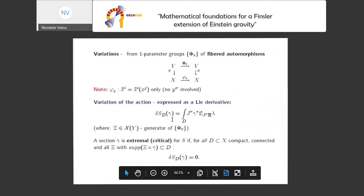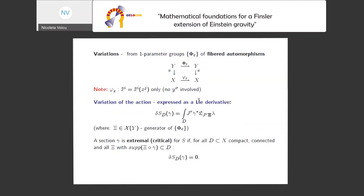The advantage of this is that we can interpret the variations of the action as Lie derivatives, but not in an arbitrary way. Variations are encoded in one-parameter groups of fibered automorphisms. A fibered automorphism is a diffeomorphism that makes a certain diagram commutative — it descends into a well-defined transformation on the base manifold. Such a fibered automorphism must always induce a transformation on the base, and this transformation only involves base coordinates. So no field is involved in what happens on the base.